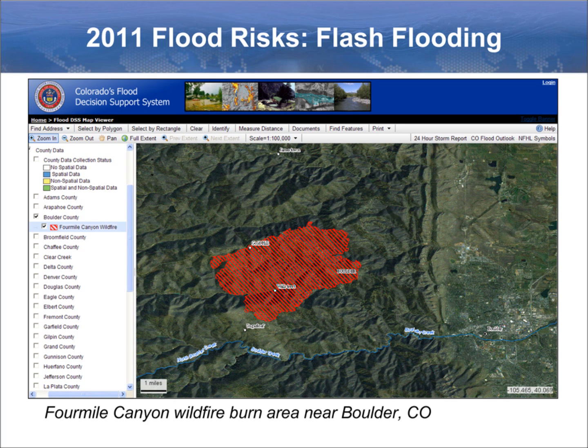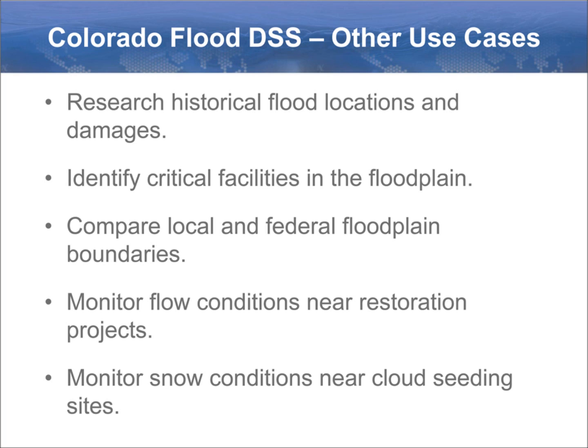Given all of the data in the system, there are lots of other things you can do with Colorado's Flood Decision Support System. For example, the system shows locations of historical floods, along with pictures of the flood and information about what caused it, the associated damages, and how many deaths occurred. You can also find critical facilities like hospitals and water treatment facilities that are located in the floodplain and may be at risk during high water events. These are just a few examples of what the system can do.